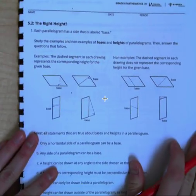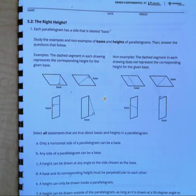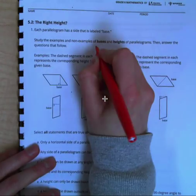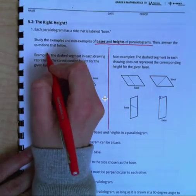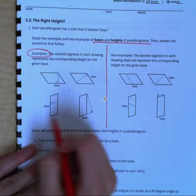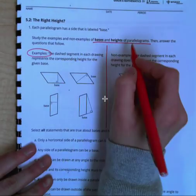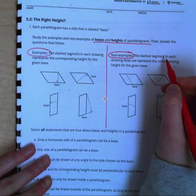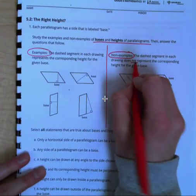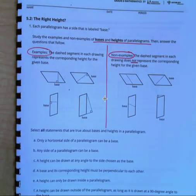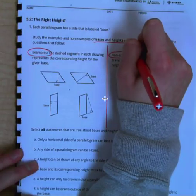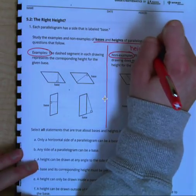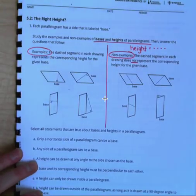Okay, let's move to the right height. So for this activity, we are going to figure out how to label the bases and heights of parallelograms. And what you have here is you have some examples of how to label the base and height over here, and over here you have some non-examples. That means that this does not represent the height for the base. The dash dotted line is the height. So we'll put height is a dash line, and that's for both sides here.